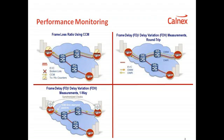However, how can you be confident that these OAM features in the devices and networks are working correctly? If a device reports a particular percentage of frame loss, how do you know that's accurate or correct? If a device reports a particular delay, how do you know it is accurate? The way to find out is really to verify and validate the performance of performance monitoring.